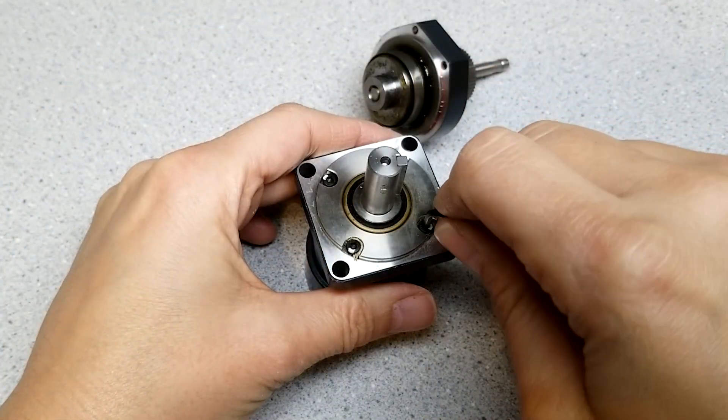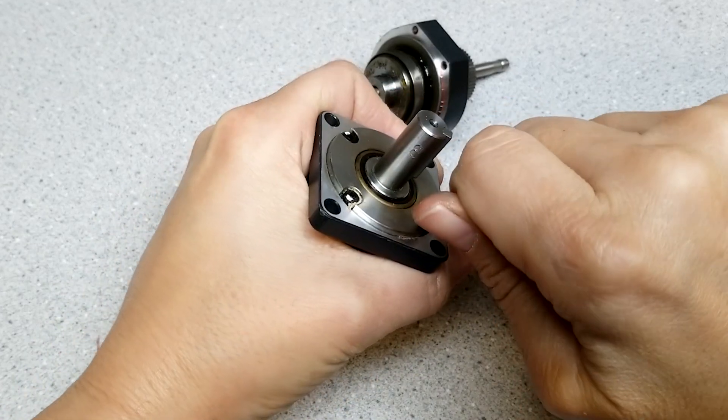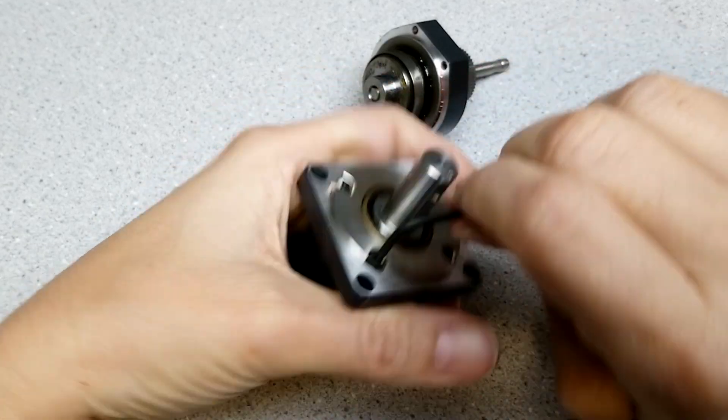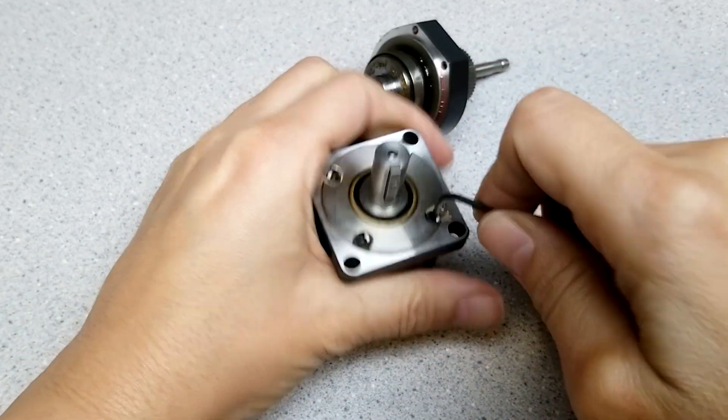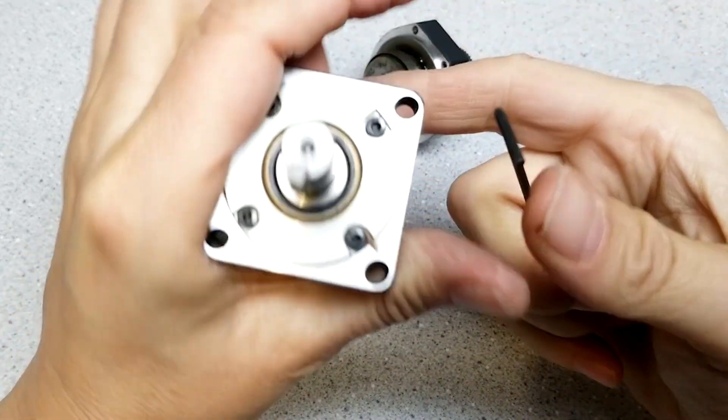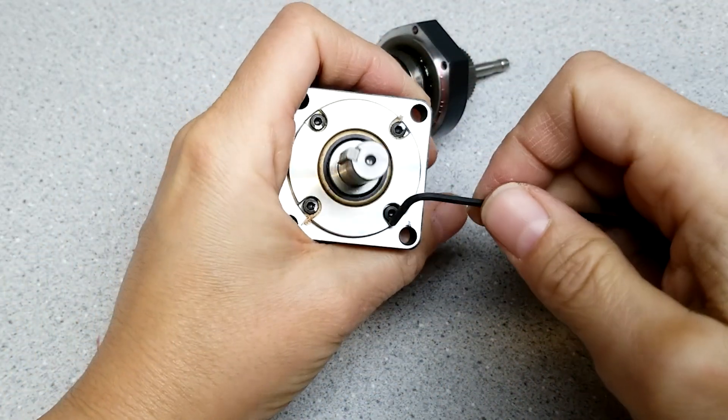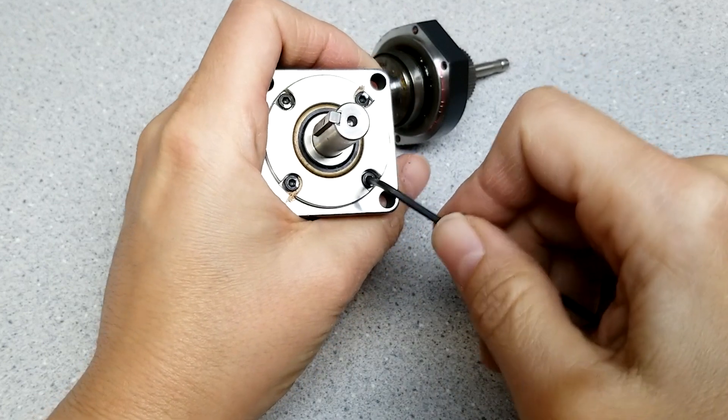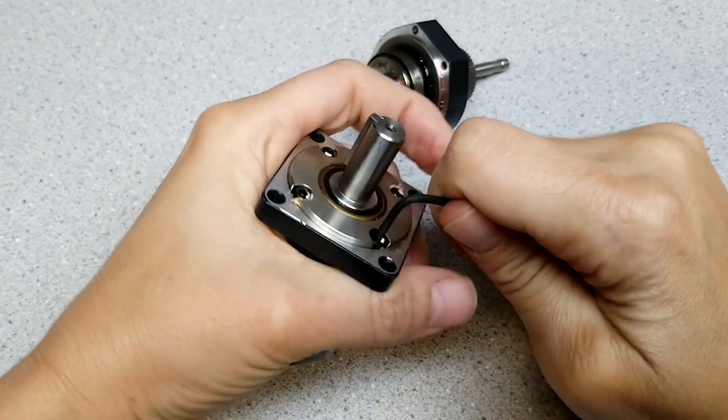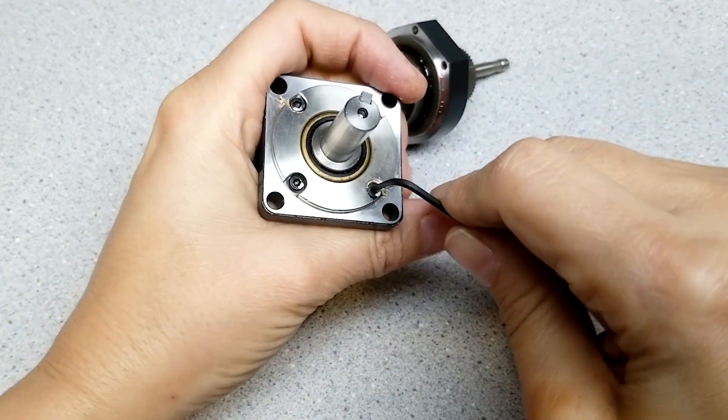So on the front there's four Allen screws, or hex screws. And we'll just loosen those up a crack on this side. Fortunately, these aren't that bad. They've got, looks like they painted them too. So someone actually inspected these. Probably. Or they painted them after they got done.